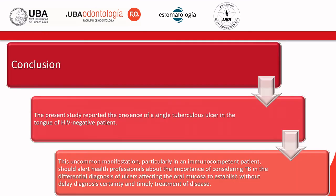The present study reported the presence of a single tuberculosis ulcer on the tongue of an HIV-negative patient. This uncommon manifestation, particularly in an immunocompetent patient, should alert health professionals about the importance of considering TB in the differential diagnosis of ulcers affecting the oral mucosa, in order to establish, without delay, a definitive diagnosis and timely treatment of the disease.